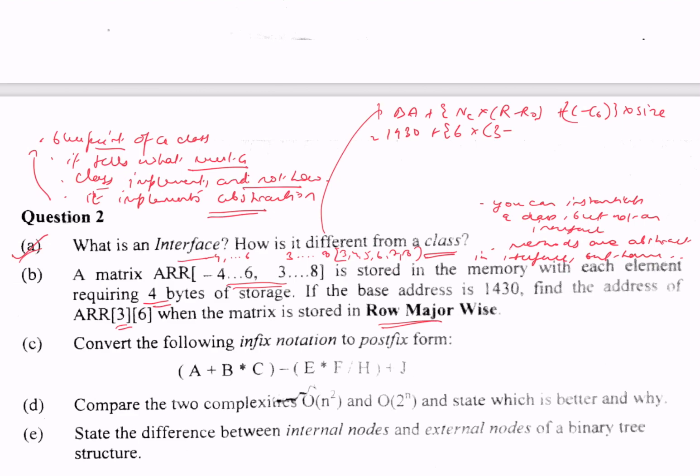Then we have plus c minus c₀. c is 6 and c₀ is 3, into size which is 4. So it is 1430 plus 6 into (3 minus -4), so 3 minus -4...